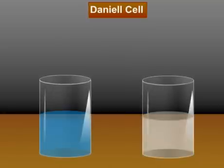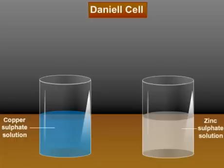Here is a setup for Daniell cell. It contains two containers. One has a copper sulphate solution and the other has zinc sulphate solution.